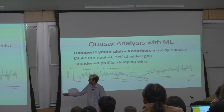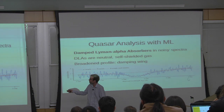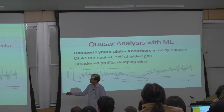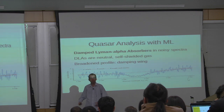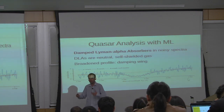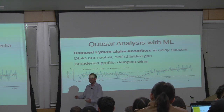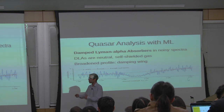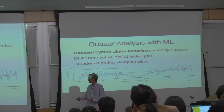We are looking for things that look like this. The dotted red line is what it would look like if the feature wasn't here, and the solid red line is what it would look like if it is. These are damped Lyman-alpha absorbers — objects that come from very dense, very neutral clouds of gas, kind of small galaxies you should think of them as.